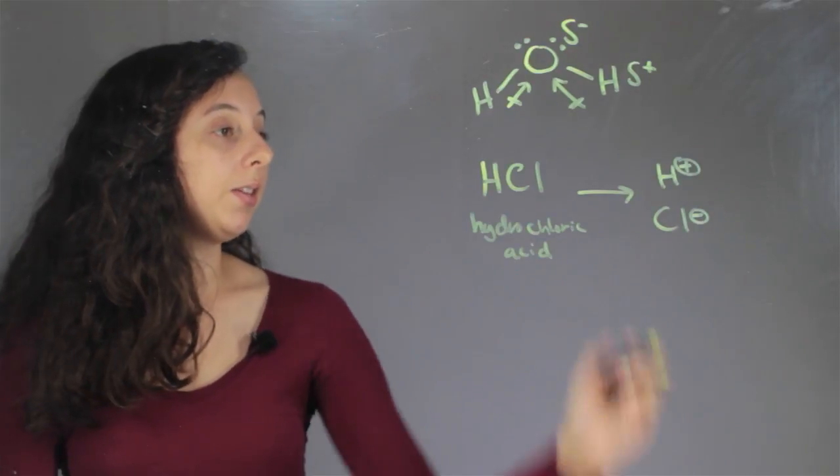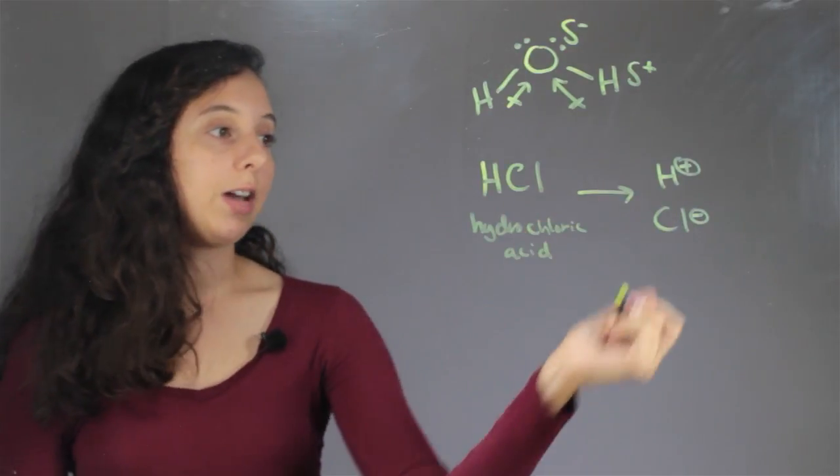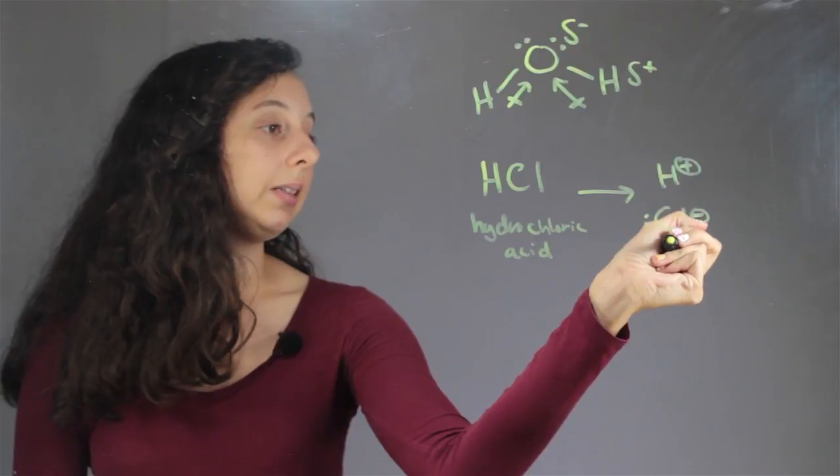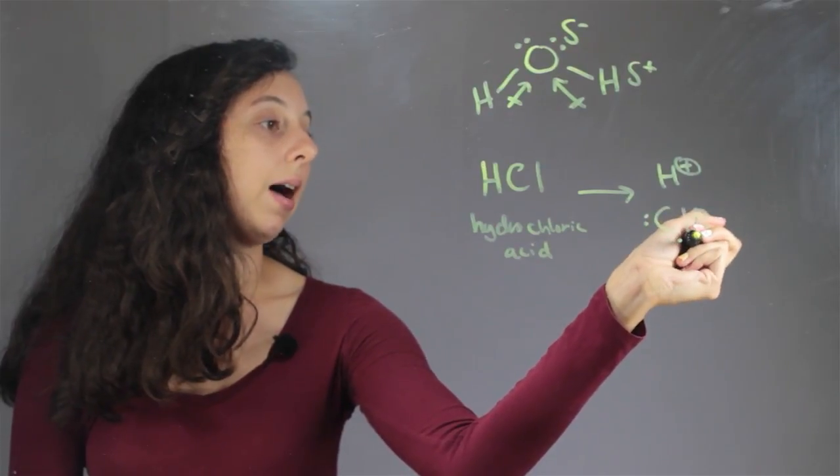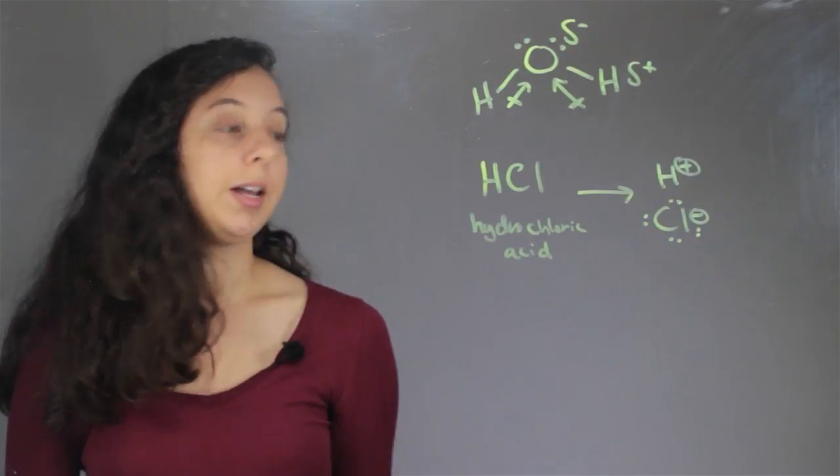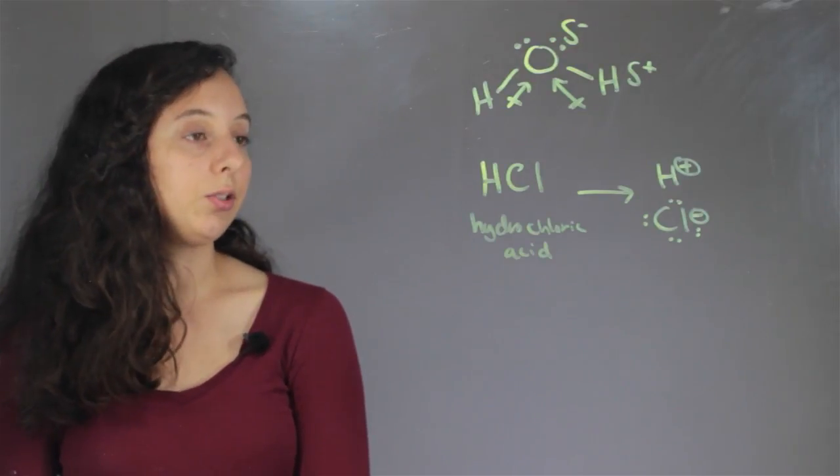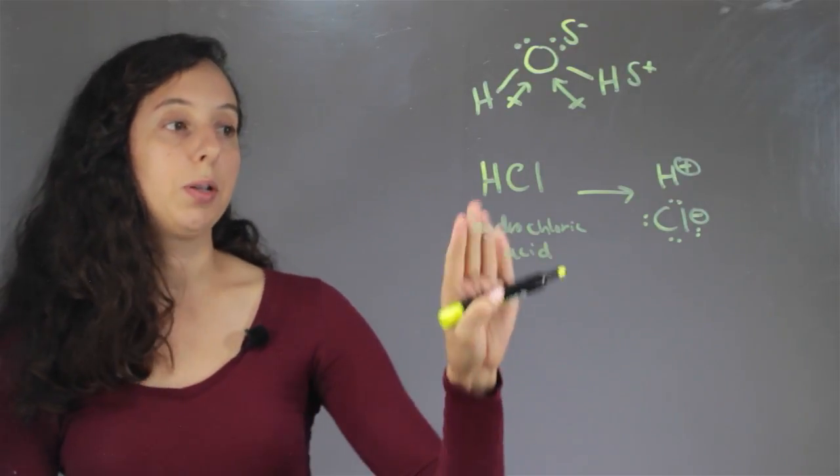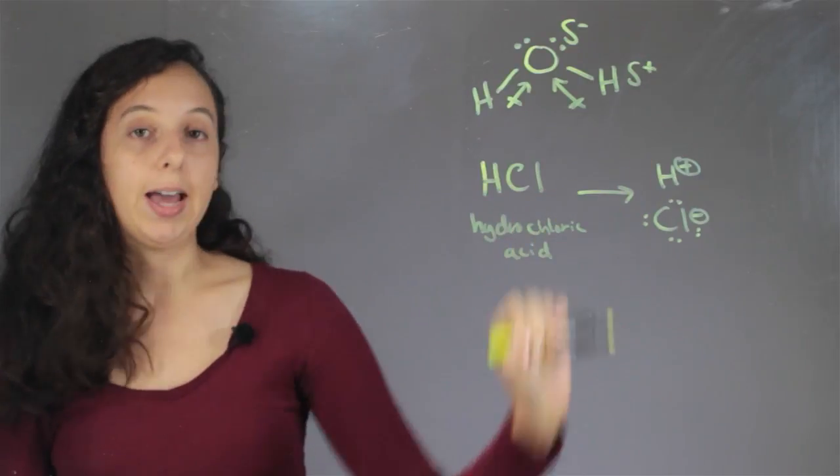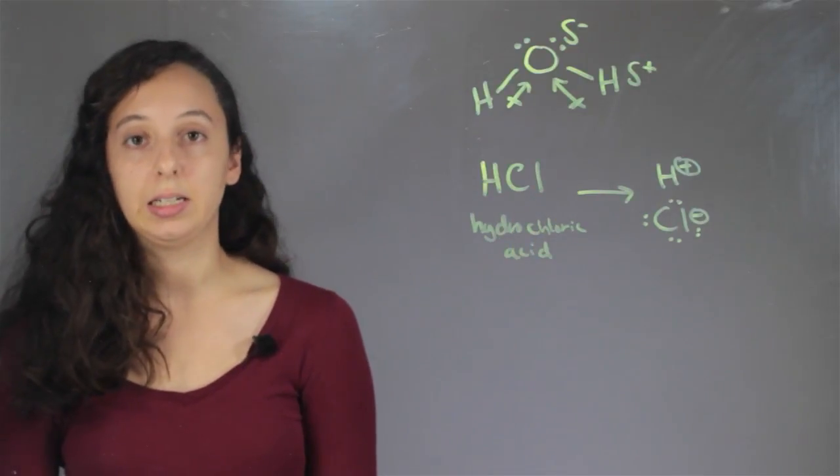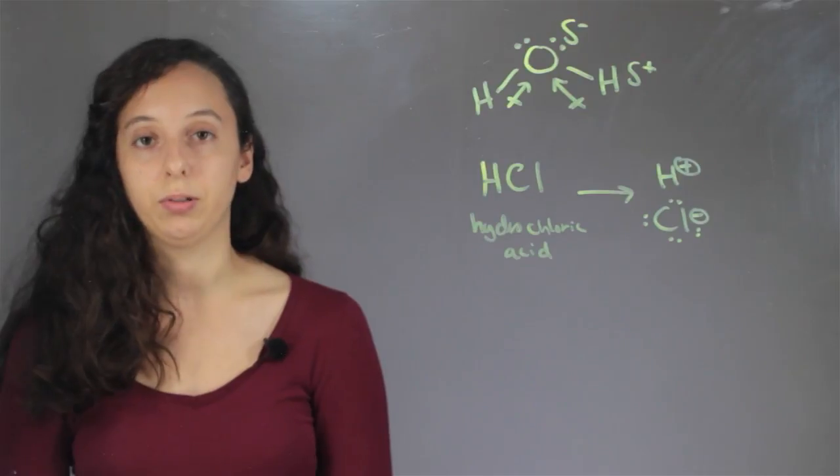And so in this scenario, hydrogen has given up its only electron completely to chlorine, who now has four lone pairs. And hydrogen has no electrons left at all. And so hydrogen is so electropositive and chlorine is so electronegative that this will completely happen. Hydrogen just isn't electronegative enough to hold onto its only electron.